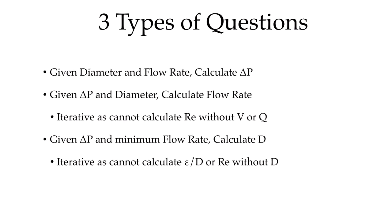Given this, we can come up with three types of questions. In the first instance, we can give you a pipe diameter and a flow rate, and you calculate delta p. This is the most direct and straightforward calculation. However, if you're given a delta p and a pipe diameter and required to calculate the flow rate, now we have an iterative problem, because to calculate a friction factor from the Moody diagram we need a Reynolds number, and we can't calculate a Reynolds number without a flow rate or velocity. Finally, we could be given a delta p and a minimum flow rate and asked what diameter of pipe is needed — that is also iterative, because we cannot calculate the relative roughness epsilon over d or the Reynolds number without knowing the diameter.